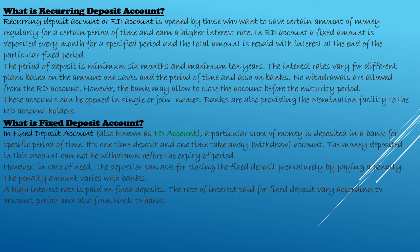A very important type is the fixed deposit account, also known as FD. What happens is you keep a lump sum amount of money — maybe 5,000 or 10,000 rupees — for a particular period. You do not have to deposit every month. Nowadays you can even keep it for a specific number of days. There are two types of fixed deposits.